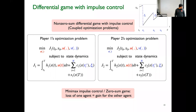Player 1's objective function has a running cost h1 depending on control u. At certain discrete time instances, player 2 intervenes, resulting in cost c1 for player 1. Similarly, player 2 incurs a running cost due to player 1's action u, and a cost of giving an impulse given by c2. S1 and S2 denote the terminal cost for player 1 and player 2 respectively.